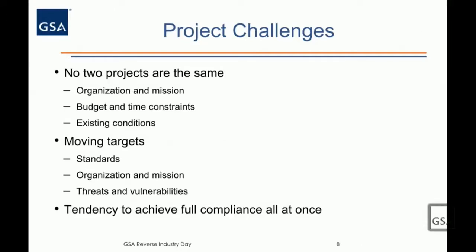The final challenge is the tendency to try to achieve compliance all at once. You're not going to get there — this is going to be a process. Don't try to take the whole piece in one shot. You want to break this into small, measurable steps. It's easier to manage your budget, your time, and your risk as you go through the project. It's also easier to show progress — if you have a well-defined roadmap and are hitting interim objectives, it's much easier to maintain the support of your stakeholders.